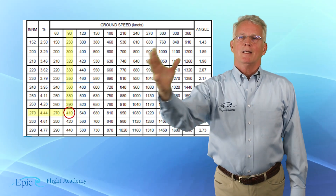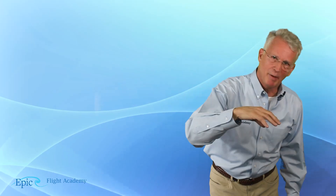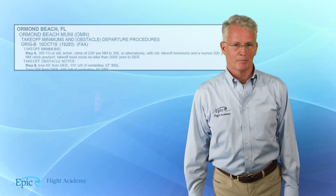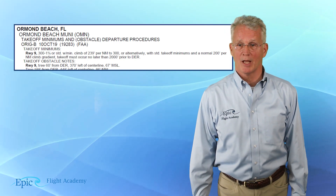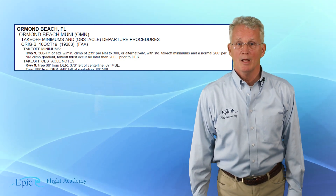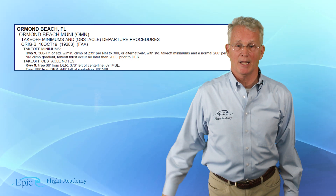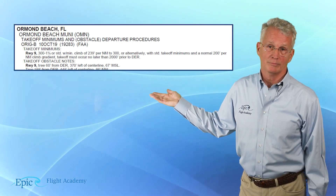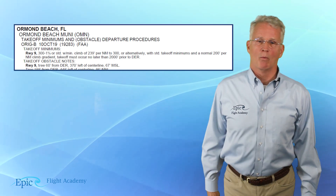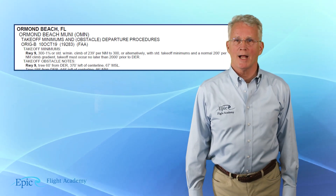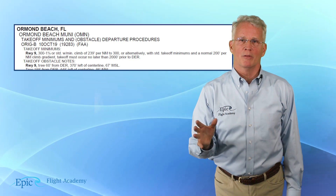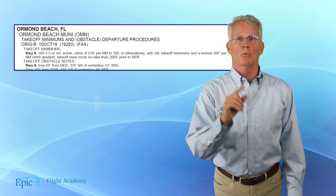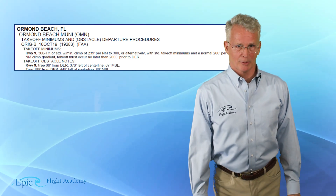Taking that information and coming back to our Ormond Beach example, it tells us that we have to climb at a minimum of 239 feet per nautical mile. Practice interpreting this and using that chart in the back of the TERPS with your flight instructor.